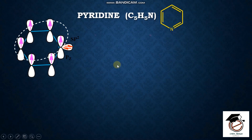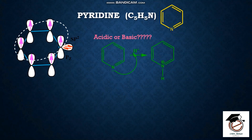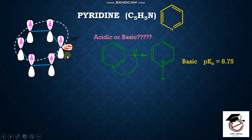Pyridine acts as an acid-base. The lone pair of electrons is available, that is why we call it a basic compound. However, the nitrogen sp2 hybridized orbital is tightly bound.